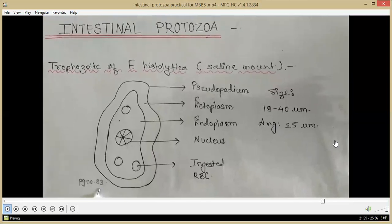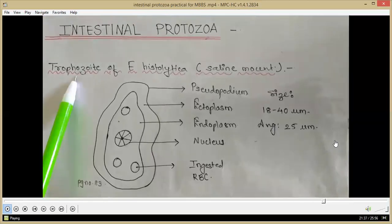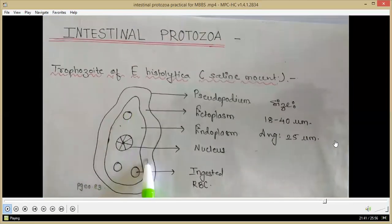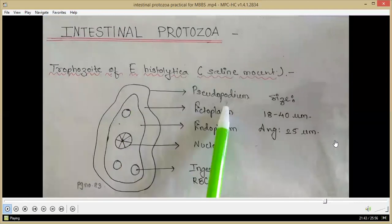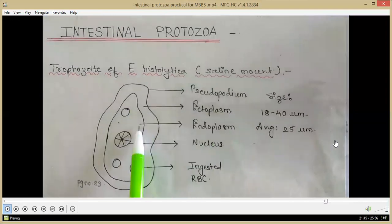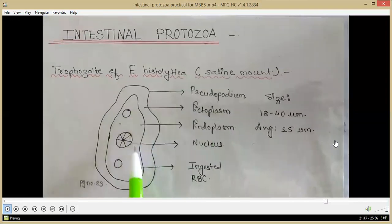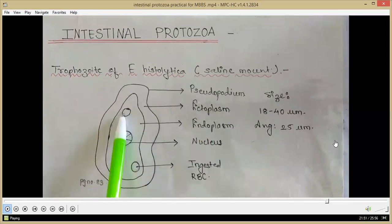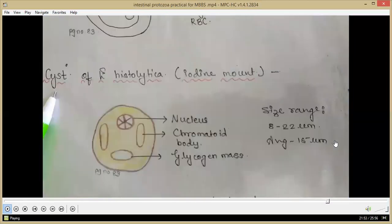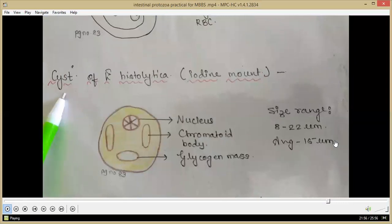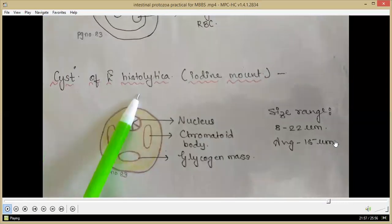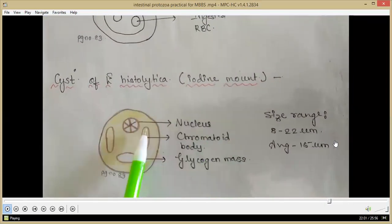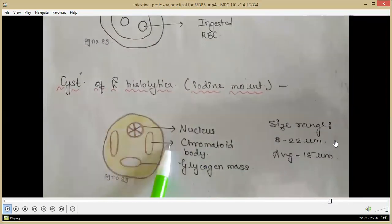Diagrams illustrate the morphological forms. The trophozoite of Entamoeba histolytica is an amoeboid form with pseudopodia, ectoplasm, endoplasm, a nucleus, and ingested RBCs can also be seen. The cyst of Entamoeba histolytica in iodine mount contains nuclei, chromatoid bodies and glycogen masses.